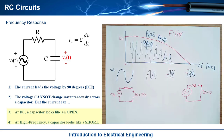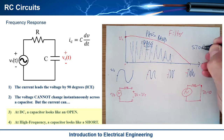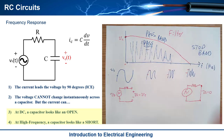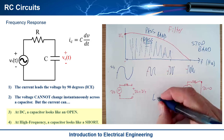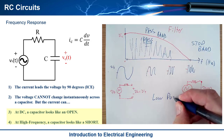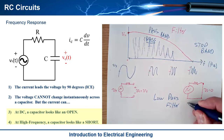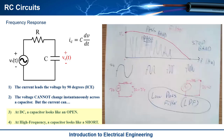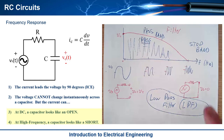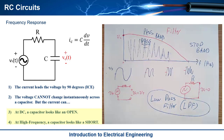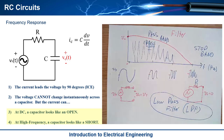Any frequencies out at the high end — this is called the stop band. This particular type of circuit is called a low pass filter, or LPF. It's always the first filter you look at, and it's the simplest form of a filter built with simply a resistor and a capacitor. It just has to do with the behavior of a capacitor.